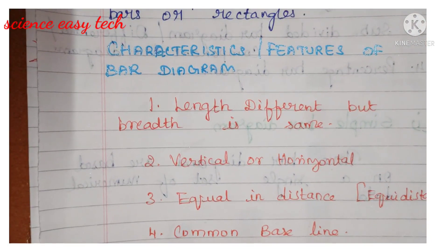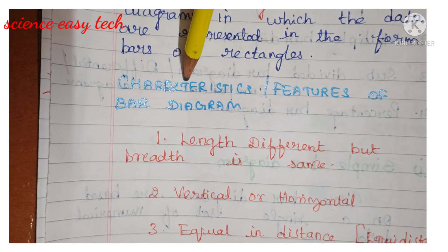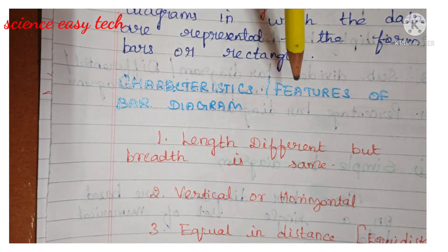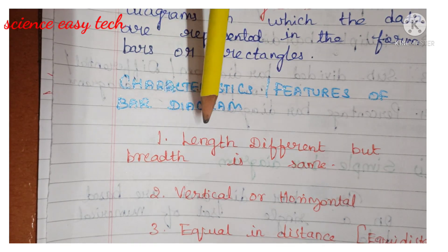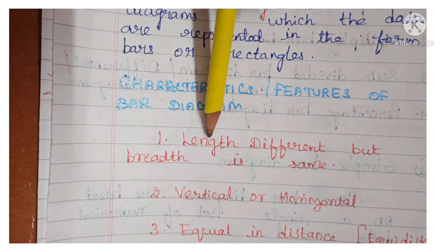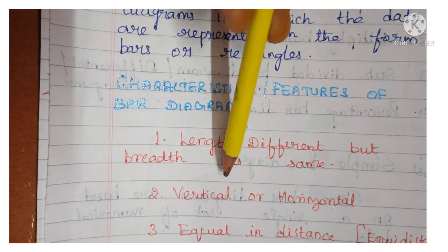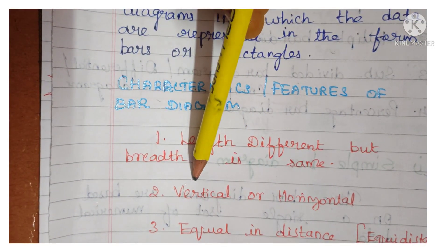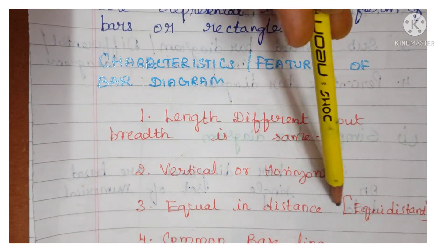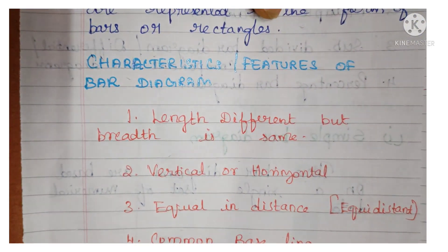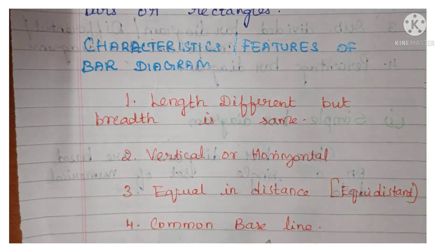So, the characteristics of a bar diagram are: length is different but breadth is the same; the bar diagram can be drawn either vertically or horizontally; it is equidistant; and it has a common baseline.